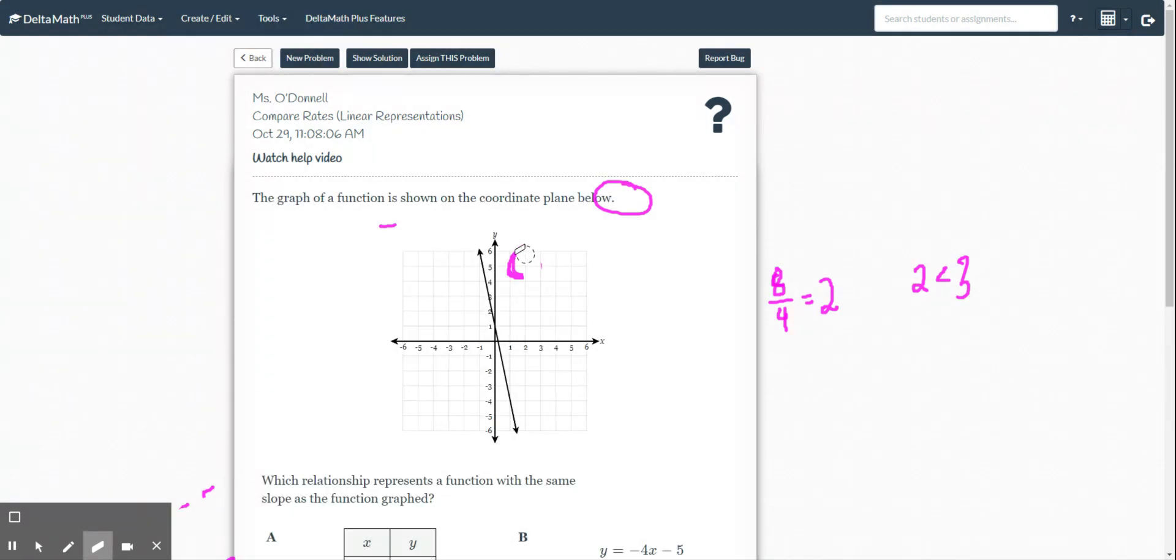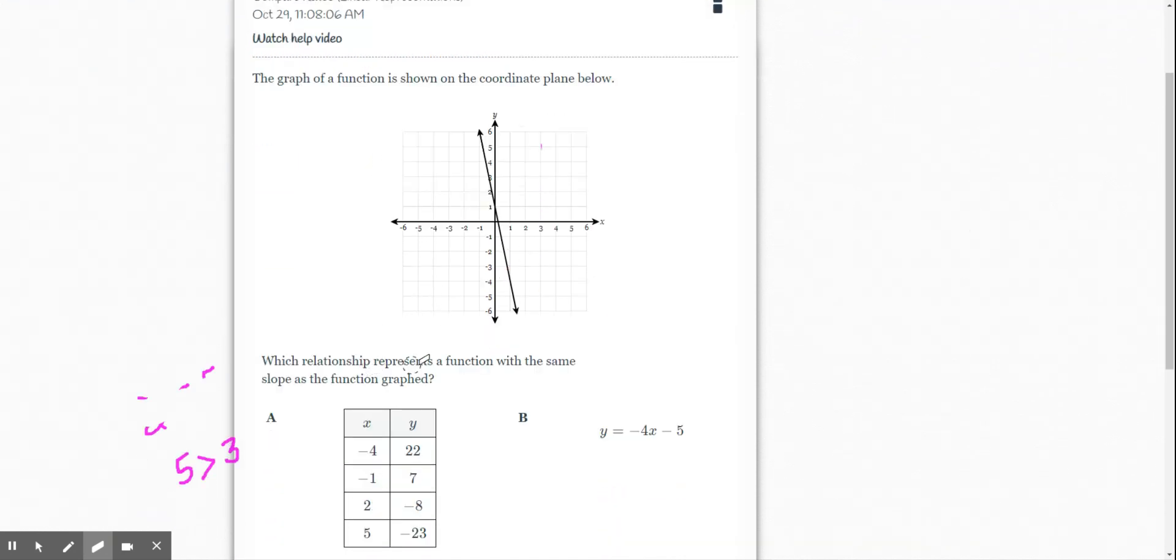So let's see here. This is all of my stuff from the last problem. So now they're going to give you different ways you have to interpret the slope. So instead of giving you an equation, now they're giving it to you as a graph.